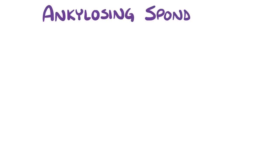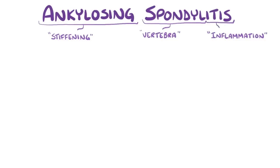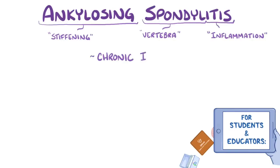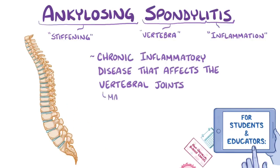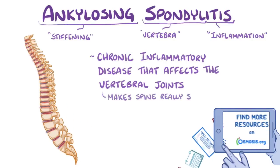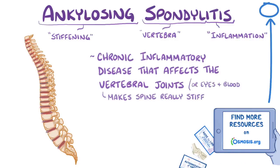The name ankylosing spondylitis can be broken down. Ankylosing means stiffening, spondylo refers to the vertebra, and itis refers to inflammation. So ankylosing spondylitis is a chronic inflammatory disease that affects the vertebral joints and makes the spine really stiff, but can also cause inflammation in other parts of the body, like the eyes and blood vessels.